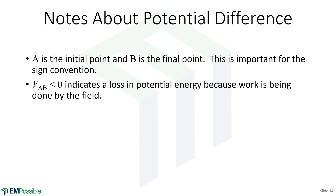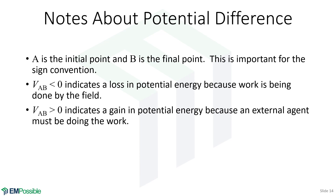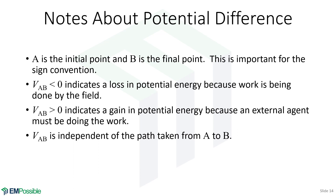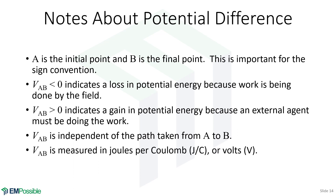If we have a negative potential difference between two points, that indicates a loss in potential energy because work is done by the electric field. If the potential difference is greater than zero, there's a gain in potential energy due to some external agent. The potential difference between two points is independent of the path taken from A to B — straight or curvy, you get the same answer. This potential difference is measured in joules per coulomb, or volts.